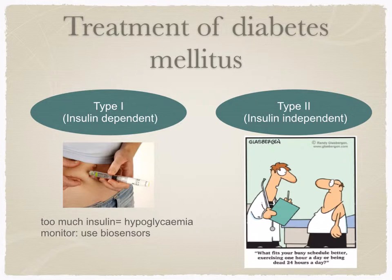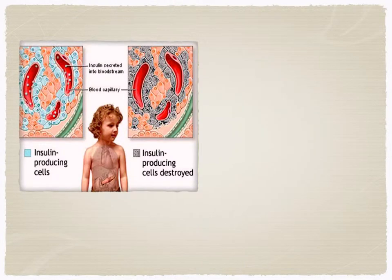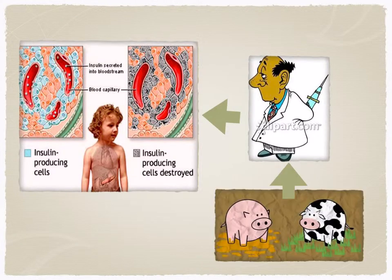Type 2 diabetes is treated by controlling the intake of carbohydrates in the diet and matching this to the amount of exercise taken. This may in some cases be supplemented by injections of insulin. Until recently, insulin was extracted from the pancreas of pigs or cows. This insulin is slightly different from human insulin and may cause side effects. Through the use of gene technology, it's now possible to produce insulin using genetically engineered bacteria.